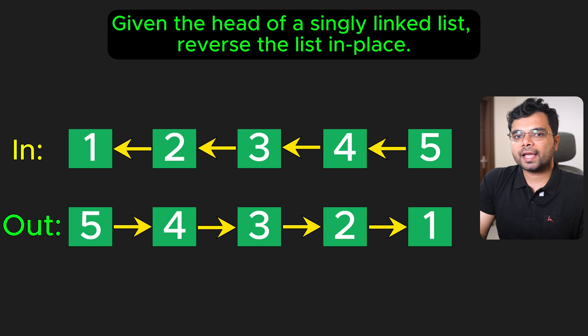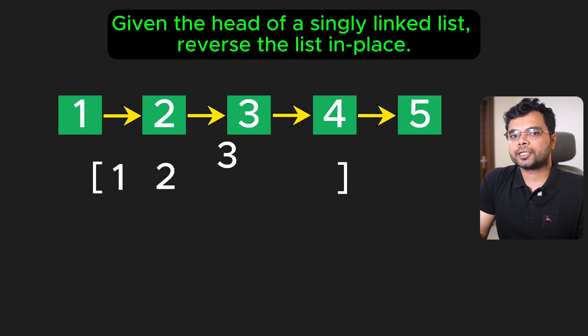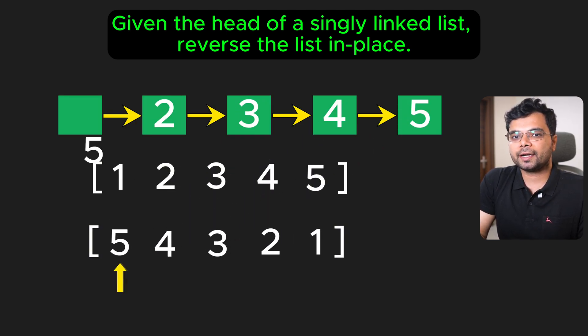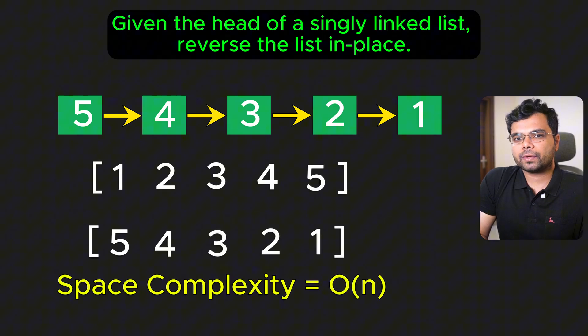to its previous node instead of the next. A naive approach would be to copy the values of the linked list into an array, reverse the array, and then iterate to update the list. But this approach requires O(n) extra space where n is the size of the list and it isn't efficient. Instead,